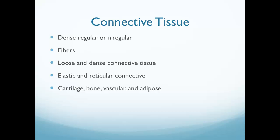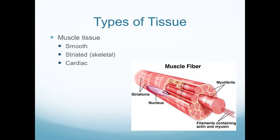Connective tissue connects things together — as the name implies. It can be defined as regular or irregular, has fibers connecting one tissue to the next, and has elastic or reticular connective components. This makes up cartilage, bone, vasculature, and adipose tissue. Muscle tissue can be divided into three major categories: smooth muscle, striated or skeletal muscle, and cardiac muscle.